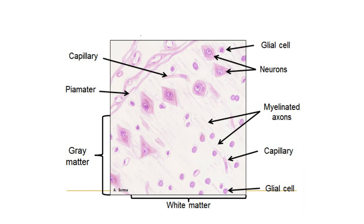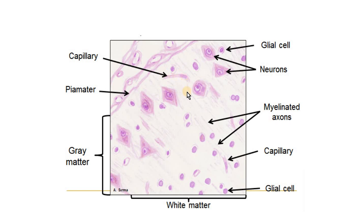I will not go into extensive details on the histology of the brain; however, I will touch on a few main elements. The central nervous system under the microscope is divided into gray matter, which contains the neuronal cell bodies, and white matter, which contains the axons of these neurons. In addition, there are glial cells that support the health of the neurons, and blood vessels that transport nutrients and oxygen to the tissue. The area in between is called the neuropil and it looks pink under the microscope.